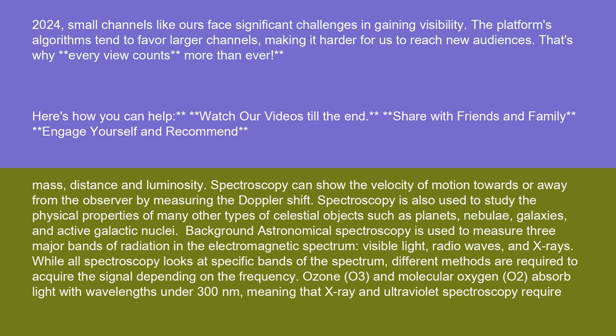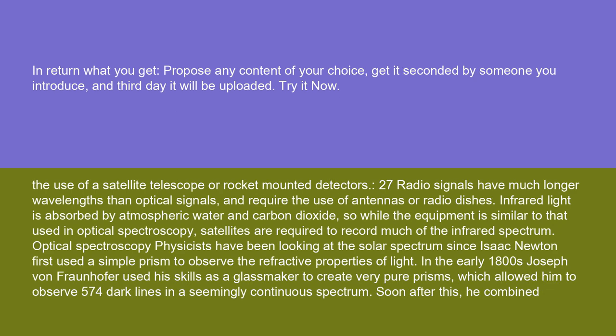Background astronomical spectroscopy is used to measure three major bands of radiation in the electromagnetic spectrum: visible light, radio waves, and x-rays. While all spectroscopy looks at specific bands of the spectrum, different methods are required to acquire the signal depending on the frequency. Ozone (O3) and molecular oxygen (O2) absorb light with wavelengths under 300 nanometers.